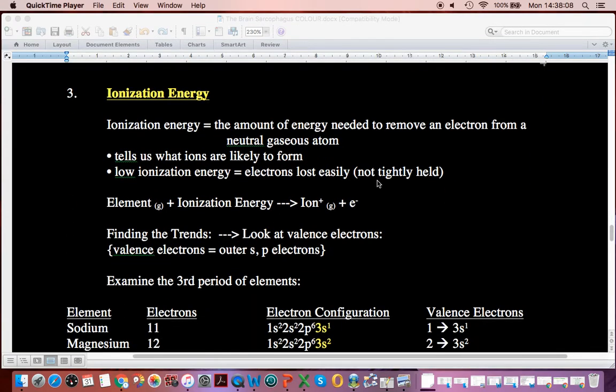Alright, so we arrive here. Now the nice thing is, if you understand atomic radii and why it gets smaller to the right, why it gets bigger going down, you're off to the races. Because the explanations for the size are going to be the same as the explanations for the changes in ionization energy.